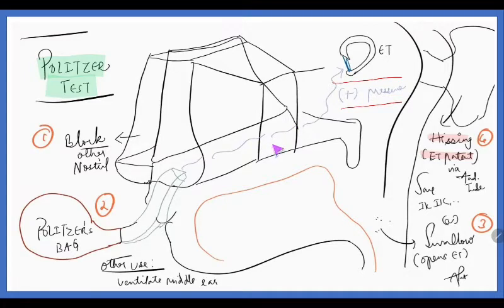Now, on the same side, we are connecting the tube with the Politizer bag, compressing the bag creating positive pressure. At the same time of creating positive pressure by compression of the bag, we are asking the patient to swallow or we ask him to say 'kick kick.' What is actually happening by swallowing or saying this, his Eustachian tube will open and the positive pressure will travel through the Eustachian tube.